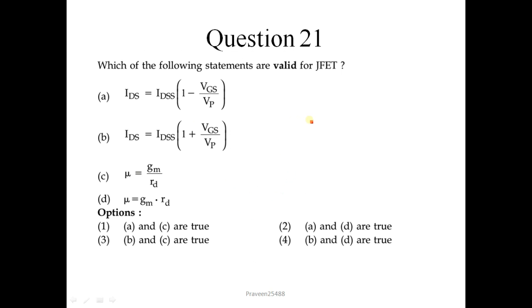Now question number 21. Which of the following statements are valid for JFET? So IDS equal to IDSS into (1 minus VGS upon VP) whole square. This is the correct expression. And μ is equal to Gm into Rd. This is the correct statement. So there is again misprint in the option.